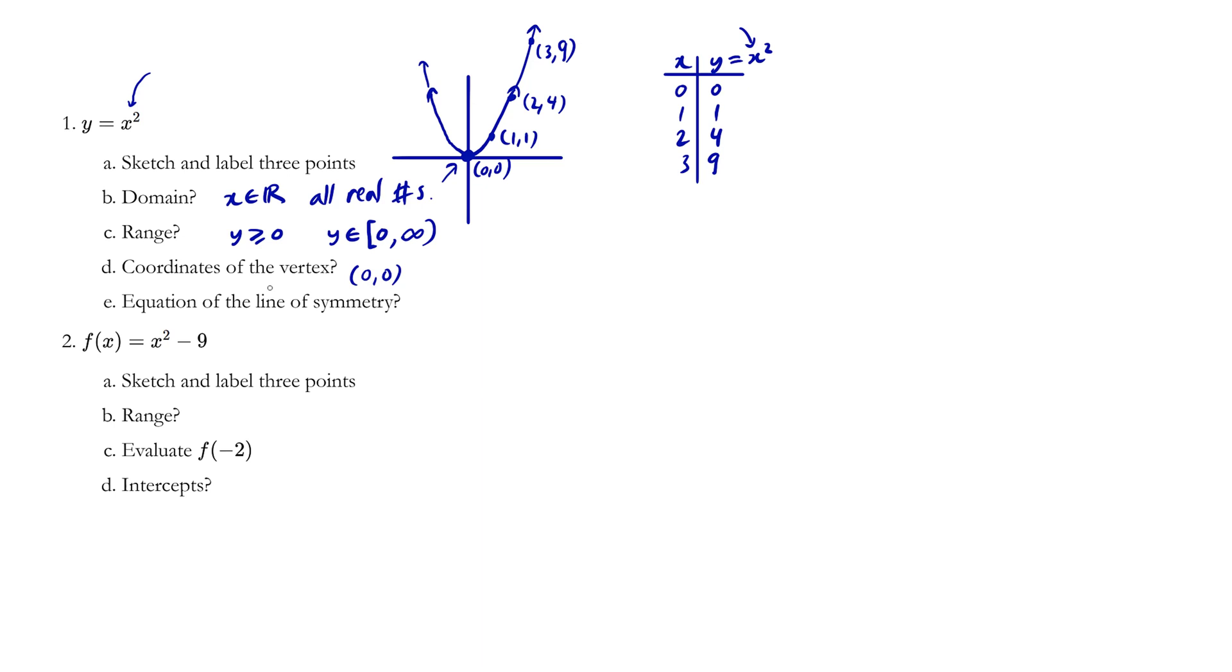The equation of the line of symmetry. So visualize a line going up and down, cutting through the middle, and we'll call this x equals 0. Do not mix up your x's and y's. x equals 0 is a vertical line. y equals 0 would be a flat line with a slope of 0.